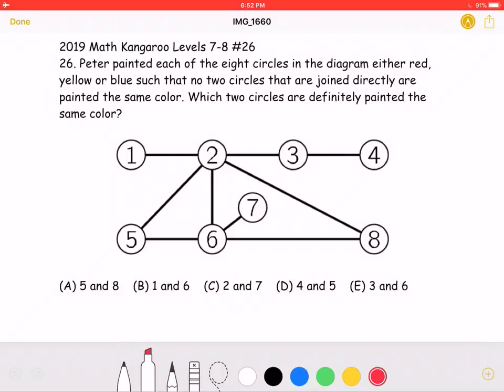Let's start by making the five red, just as an example. The problem states that no two circles that are joined directly are painted the same color. This means that two and six, one of them will be blue and one of them will be yellow. Without loss of generality, let's make the two blue, meaning that the six must be yellow.